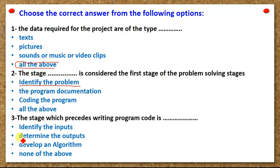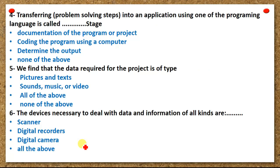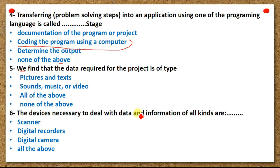Three — the stage which precedes writing program code is: identify the inputs, determine the outputs, develop an algorithm, or none of the above. Four — transferring problem-solving steps into an application using one of the programming languages is called: stage documentation of the program or project, coding the program using a computer, determine the output, or none of the above.